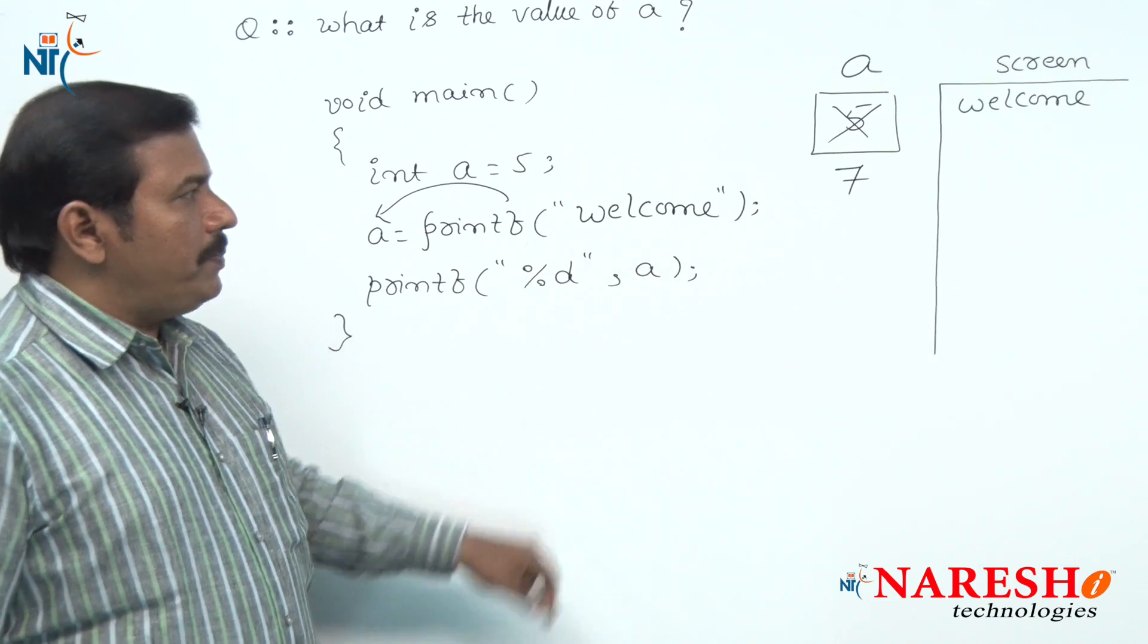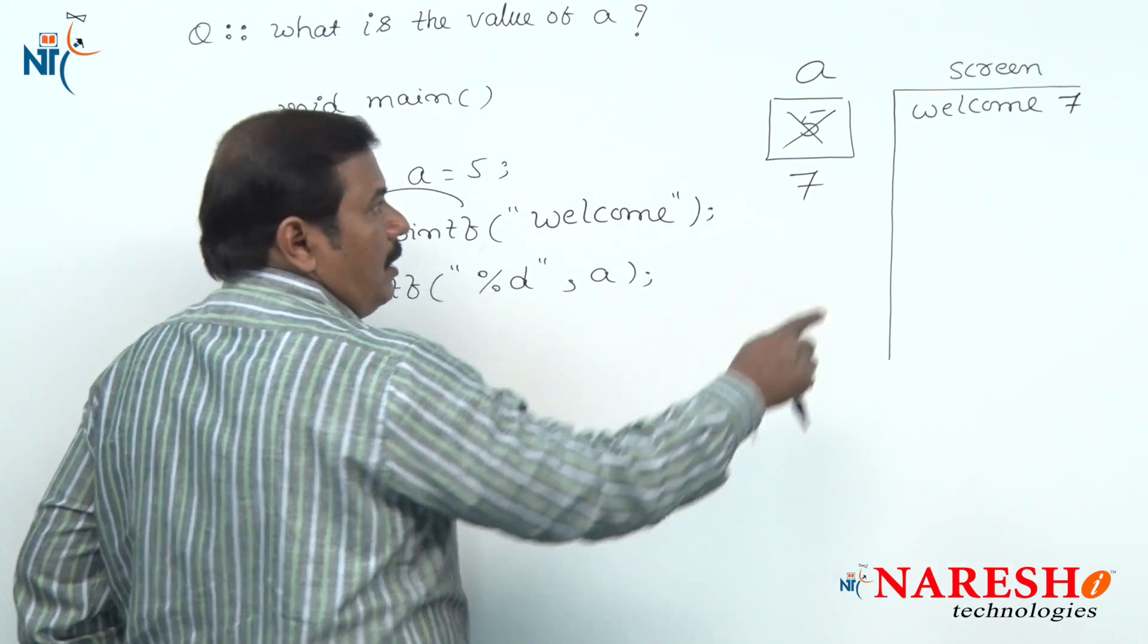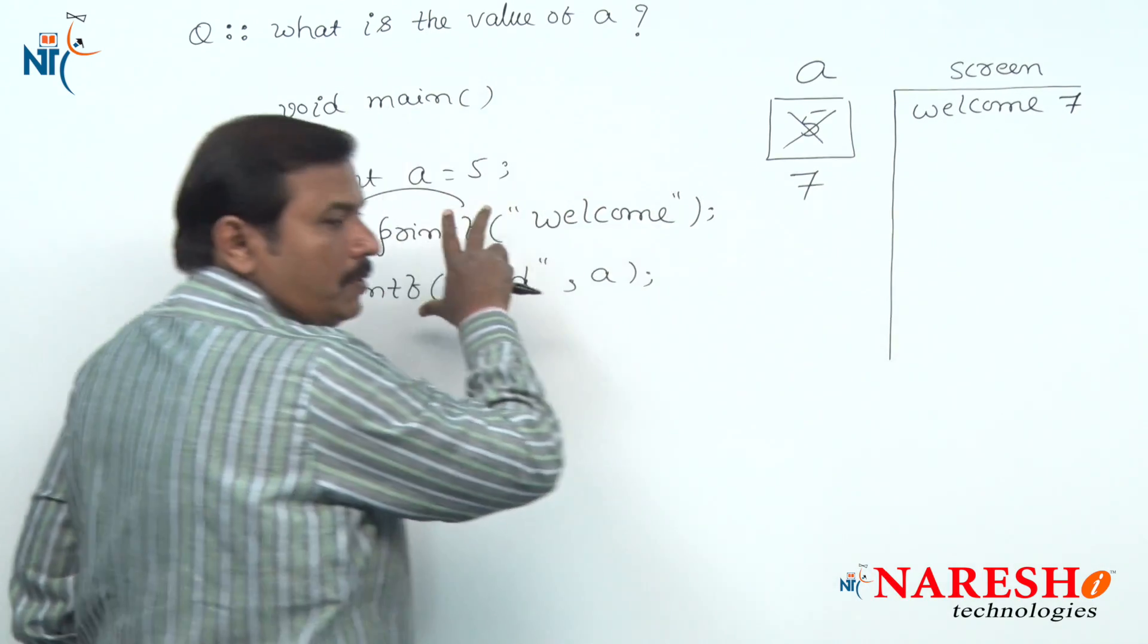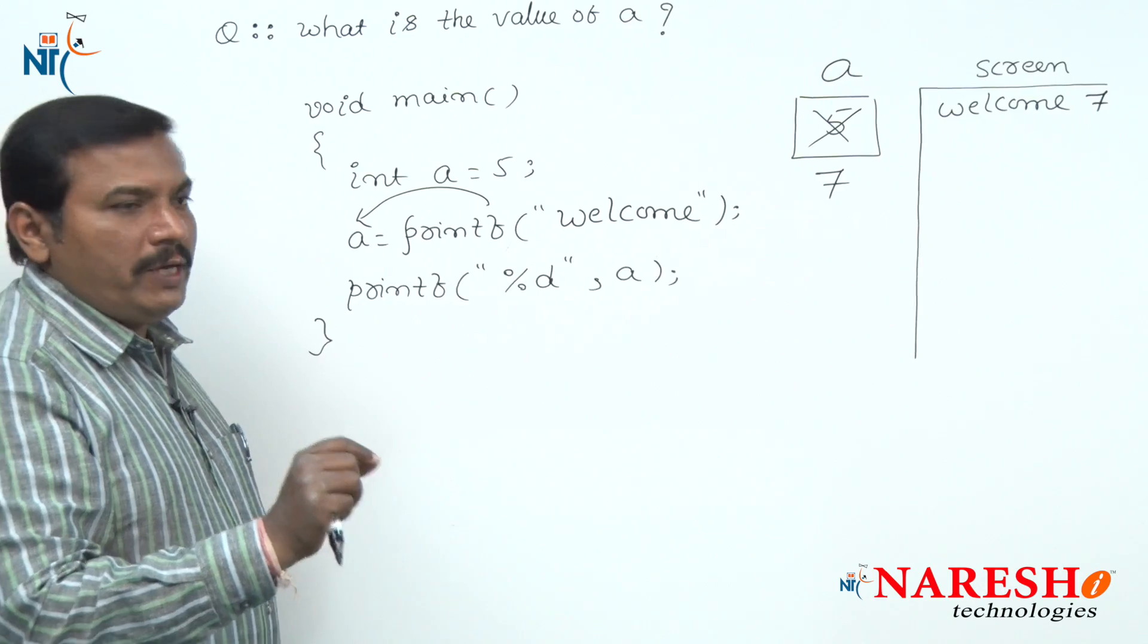The last statement prints A value 7 onto the screen. Of course, it is the complete output of this code, but in this question asked what is the value of A.